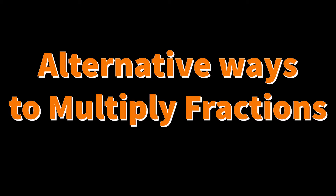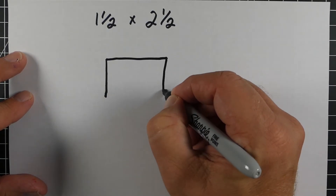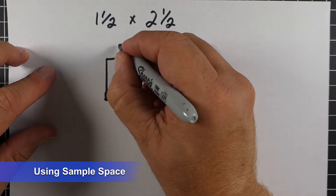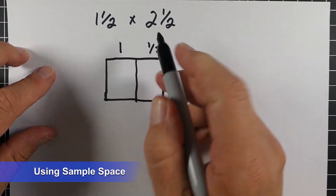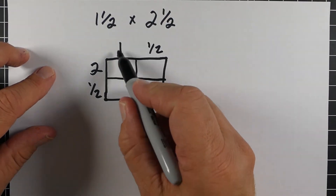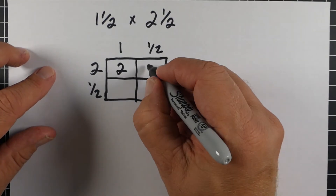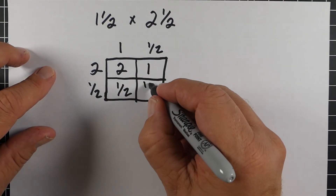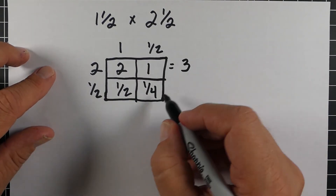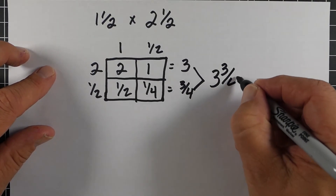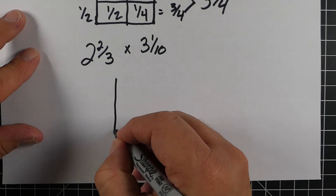There are some alternative ways to multiply mixed numbers. One method is what's called a sample space — basically making a box. For one and one-half times two and one-half: put the 1 on the left and the one-half on the right, and two and one-half going down the side. Then: two times one is two, two times one-half is one, one-half times one is one-half, and one-half times one-half is one-fourth. Add all those up and you get your answer.